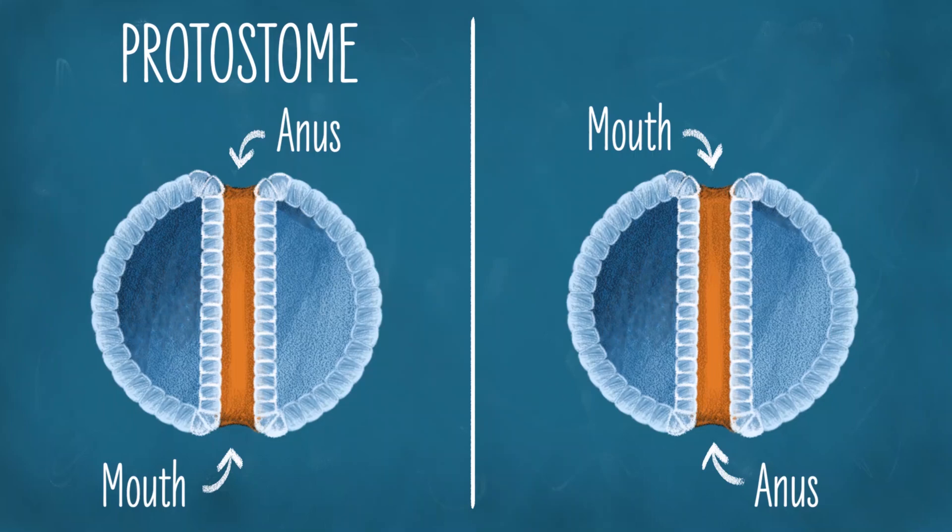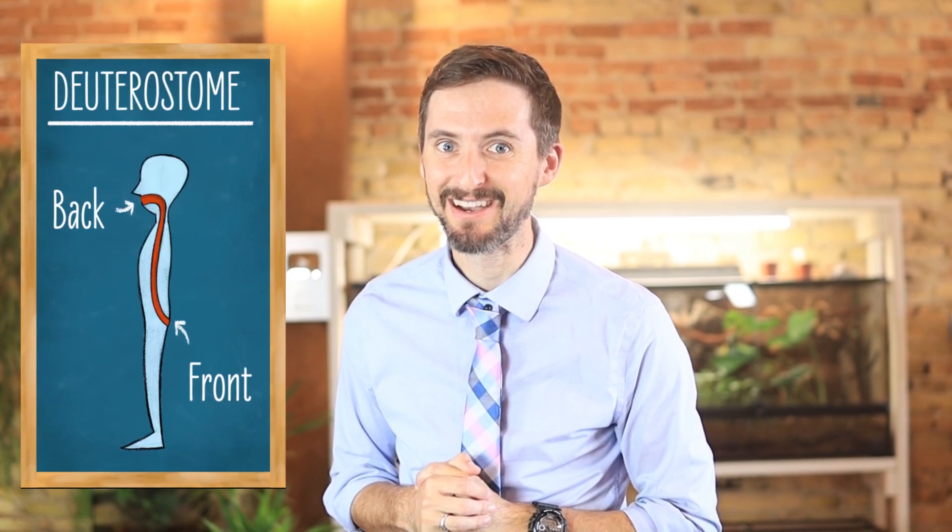Anus-first development is called deuterostome development. I find that people would like to hear that they are protostomes, because hearing that your anus is the far side of your mouth is so much more pleasant than hearing that your mouth is the far side of your anus. But I have bad news. You're a deuterostome.